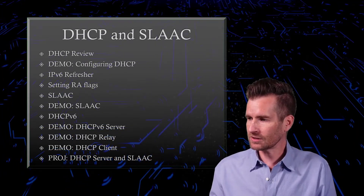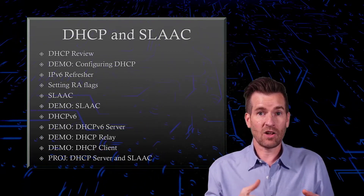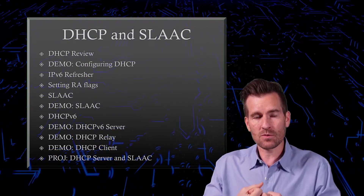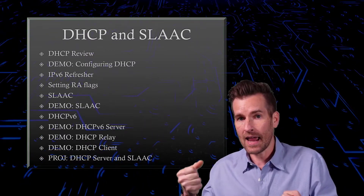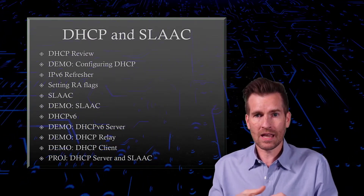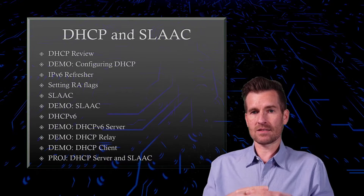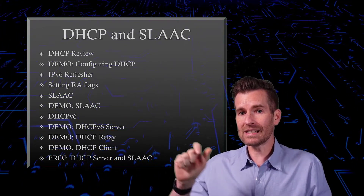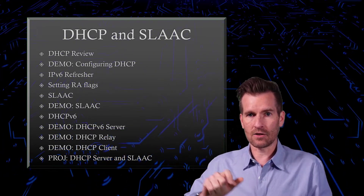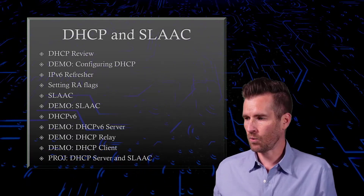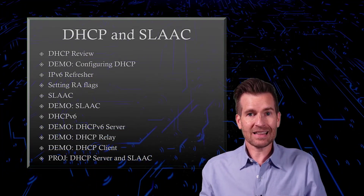We'll get into what DHCP version 6 looks like, and we'll get into what's called a DHCP relay. Sometimes we want a DHCP server, but we want it on another network — not on the local area network. So we will need to know how to relay that traffic — that layer two traffic — to another network.